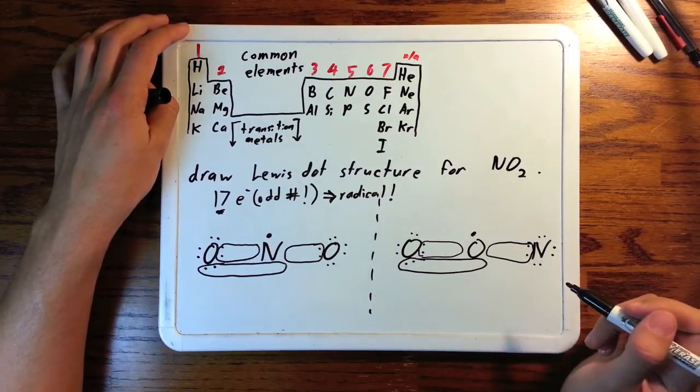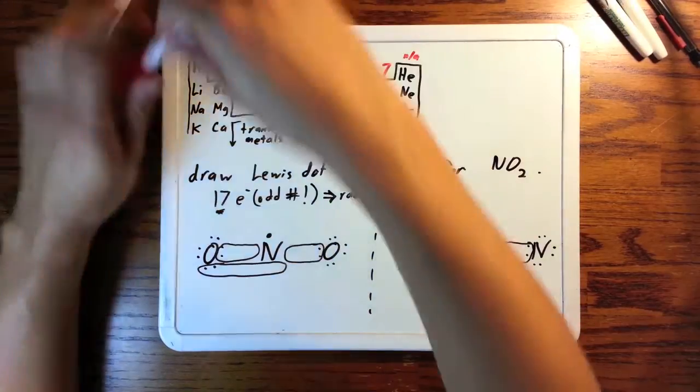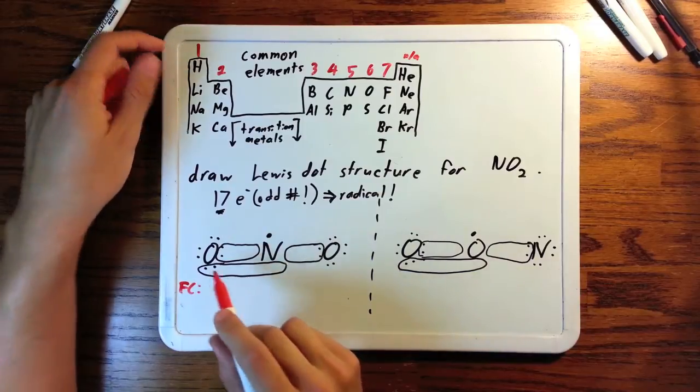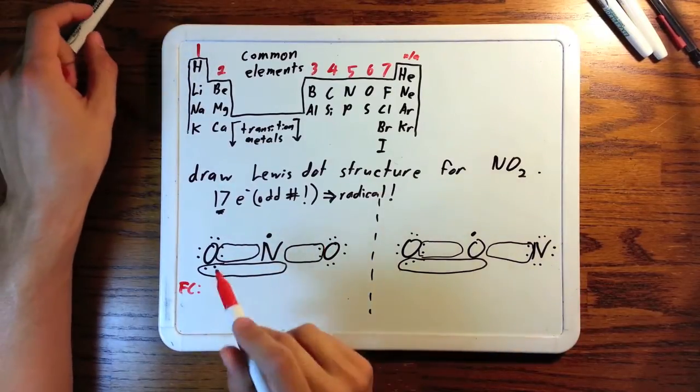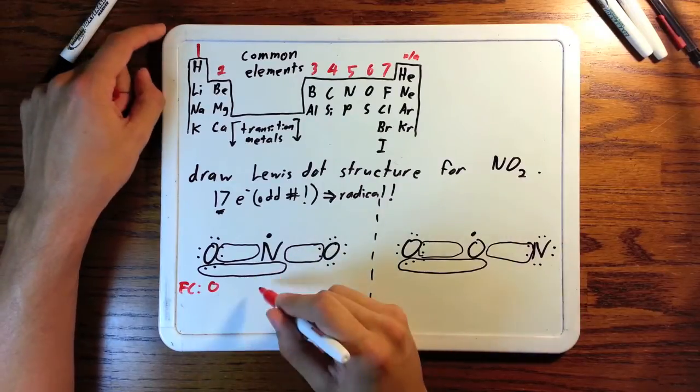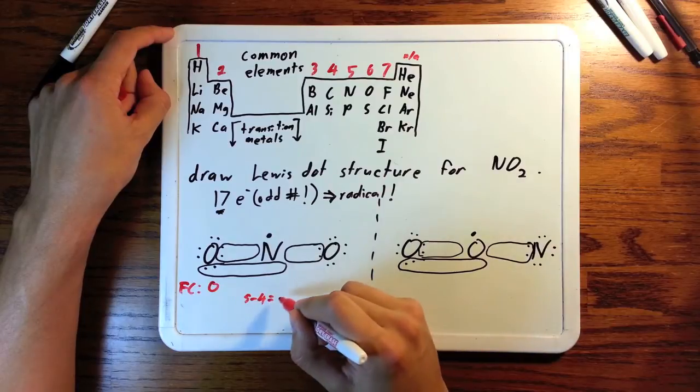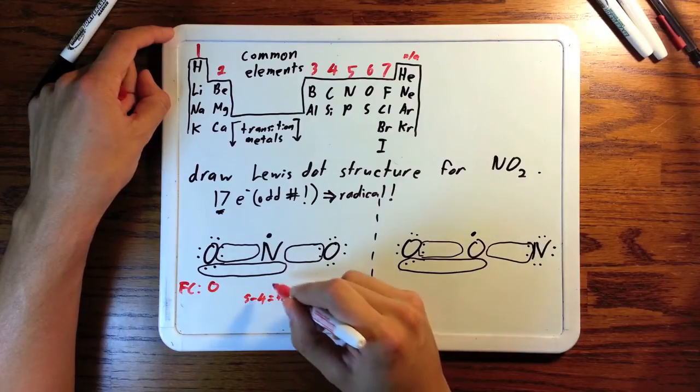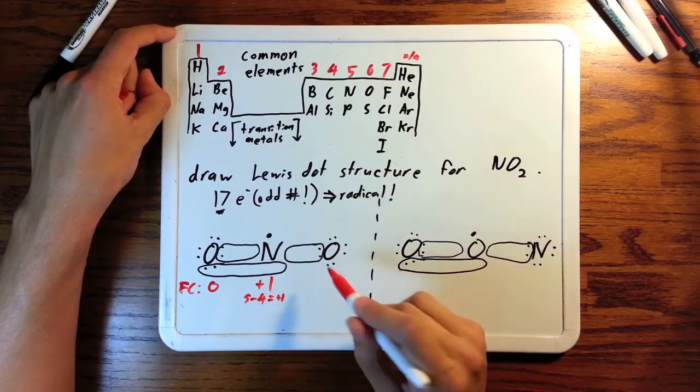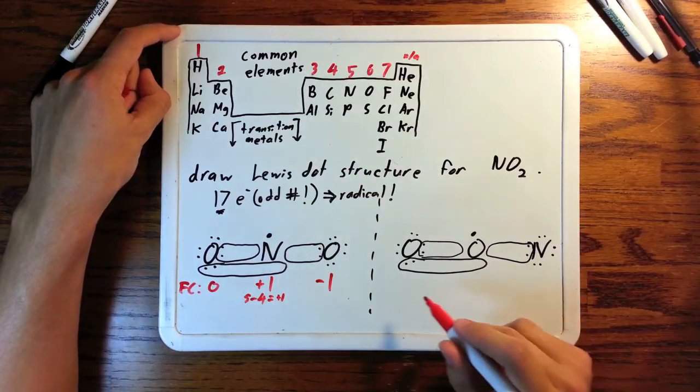Now that we have two possible Lewis dot structures for this molecule, let's assign formal charges to each atom. Here we have 6 for oxygen, that's its periodic table number, minus two lone pairs, which is 4, and then two bonds. 6 minus 6 is 0. Nitrogen's number is 5, and it has three bonds and one lone electron. 5 minus 4 equals plus 1. Nitrogen's formal charge is plus 1 here. Now we have oxygen with a full octet and only one bond. That will always be 6 minus 7, negative 1.